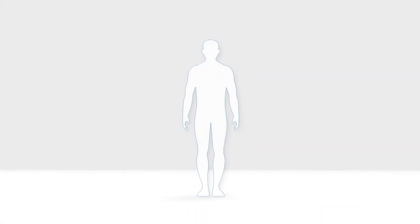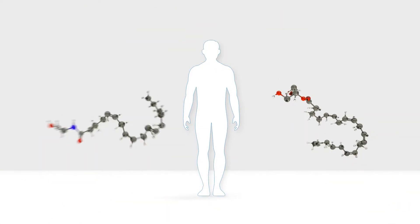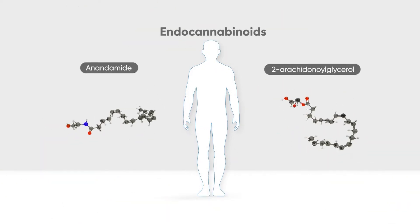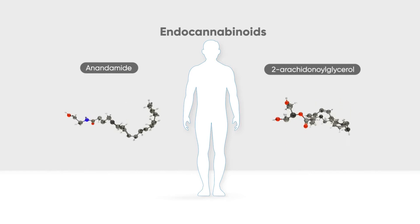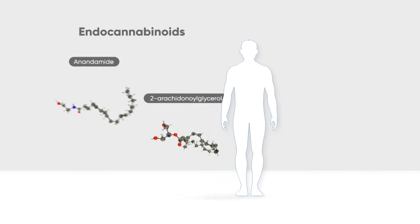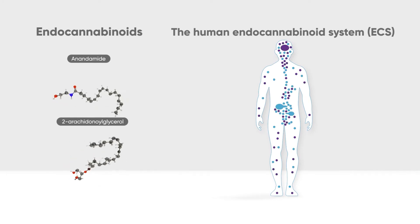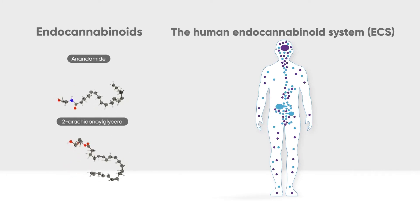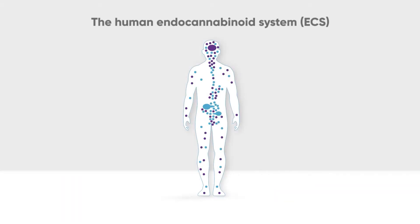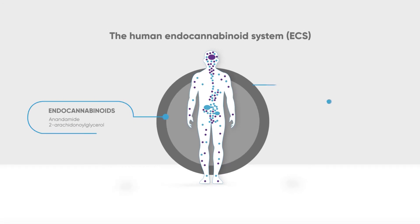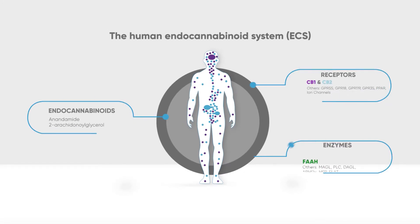Let us now explore how the human body's endocannabinoid system works. Cannabinoids are also endogenously produced in the human body, and are called endocannabinoids. The endocannabinoids are part of a widespread neuromodulatory system that plays important biological roles, called the endocannabinoid system. The other components of the endocannabinoid system include different receptors and enzymes that are involved in controlling the synthesis and degradation of endocannabinoids.